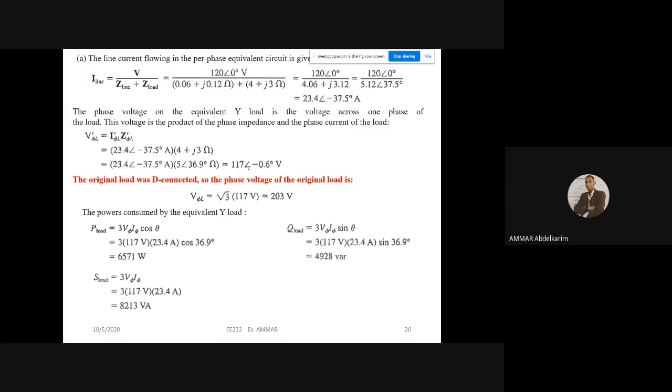Then we calculate the power. We have seen that we can calculate the power with phase quantities or with line quantities. So if we have phase voltage and phase current, we use three multiplied by phase voltage, phase current, cosine theta. And if we work with line quantities, we use square root of three line voltage and phase voltage.